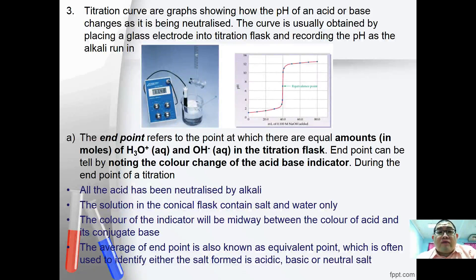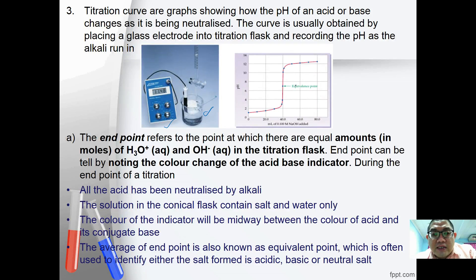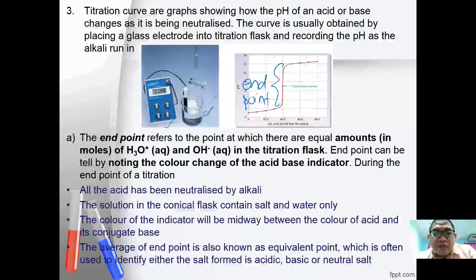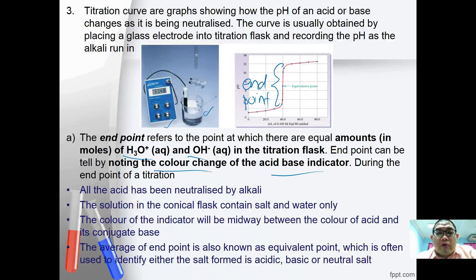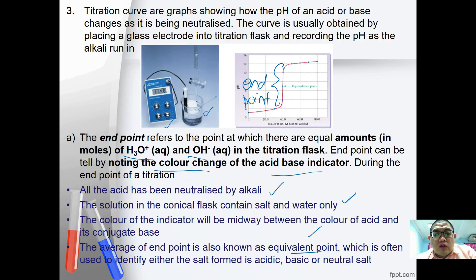Titration curves are graphed to show how the pH of an acid-base system changes as it is neutralized. A glass electrode placed in the titration flask records pH as alkaline is run in. The end point is where the amounts of H₃O⁺ and OH⁻ are equal. Color changes of the indicator mark this point; at the end point, all acid is neutralized, leaving only salt and water, and the equivalence point indicates whether the salt is acidic, basic, or neutral.